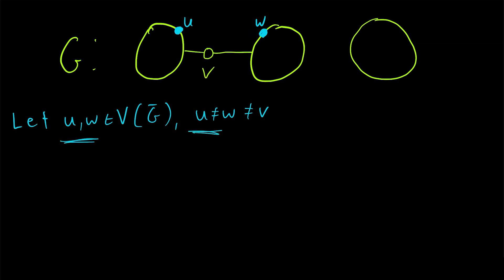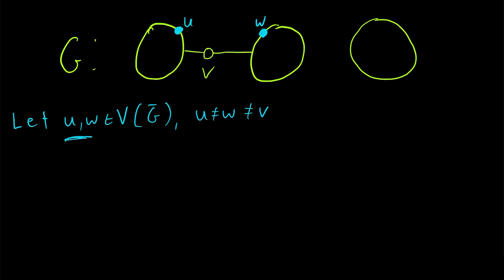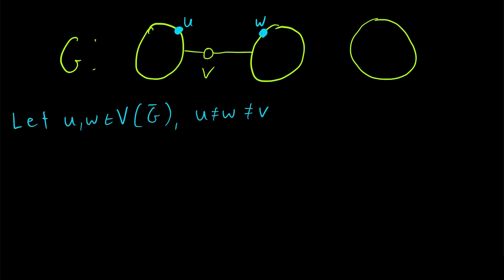We know that two vertices like U and W exist because we're assuming V is a cut vertex of G, so at the very least there are two vertices distinct from each other and from V in G that deleting V disconnects. Since G complement has the same vertex set as G, G complement must have at least one pair of distinct vertices not equal to V.